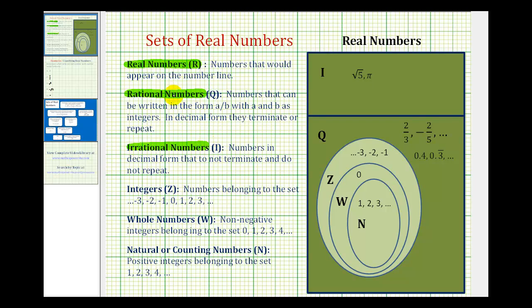But before we define these two sets of numbers, I'd like to start with the natural numbers or counting numbers, then we'll work our way up. Natural numbers or counting numbers, identified by capital N, are the numbers one, two, three, four, five, six, and so on. Looking at our Venn diagram, the natural numbers would be these numbers in this set here, again identified by capital N.